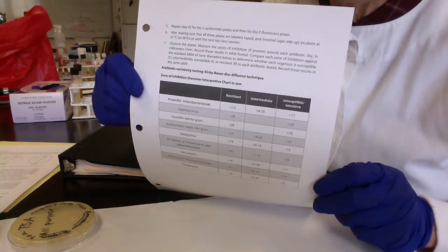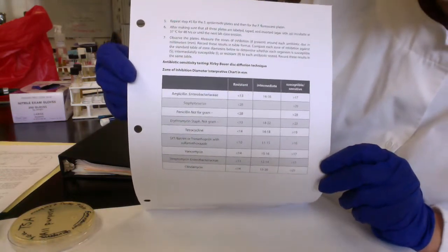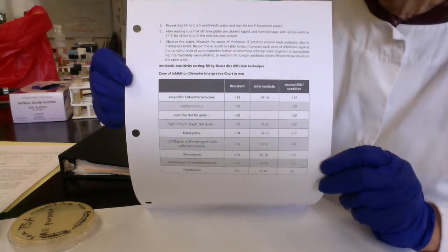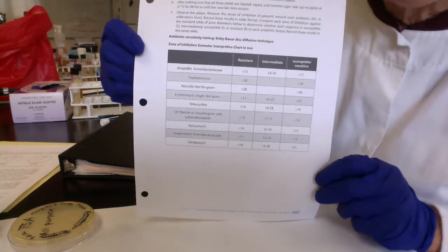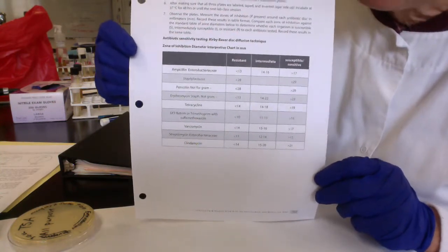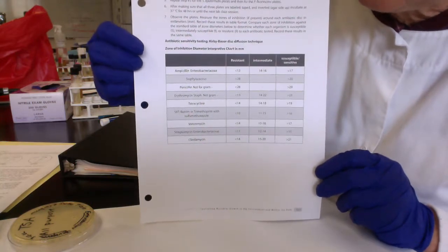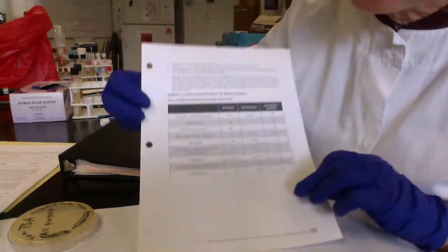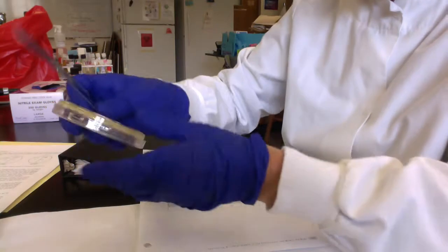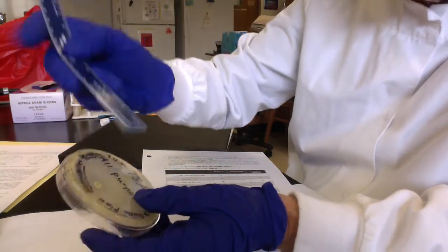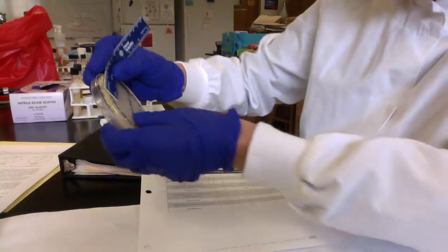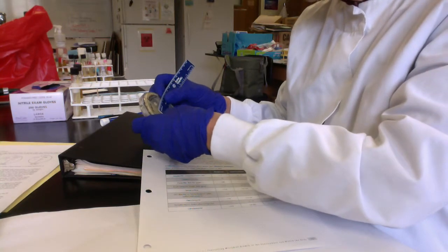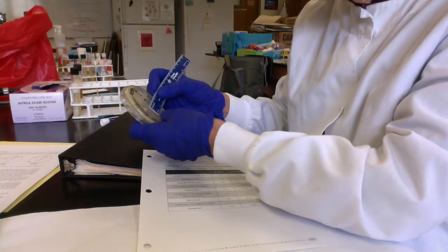Kirby and Bauer did all the research to correlate diameters of zones of inhibition with different antibiotics and whether you could safely achieve that MIC in a patient. With all that data they developed zone of inhibition diameter interpretive charts — this is just a sample, as there are hundreds of antibiotics in the real charts. These tables let us find the diameter of the zone of inhibition for our bacterium. So this is our Enterobacter aerogenes and this is a Bactrim disc. Bactrim is a combination of sulfamethoxazole and trimethoprim, the sequential inhibitors of folic acid synthesis.